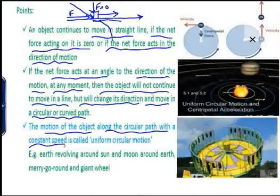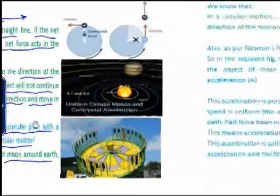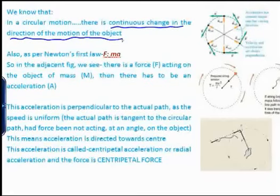The motion of an object along a circular path with a constant speed is called uniform circular motion. The best examples are Earth revolving around the Sun and the Moon around the Earth. Other common examples are the merry-go-round and the Ferris wheel. In circular motion, there is a continuous change in the direction of motion of the object.